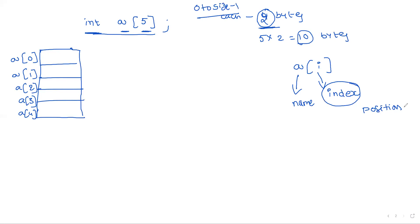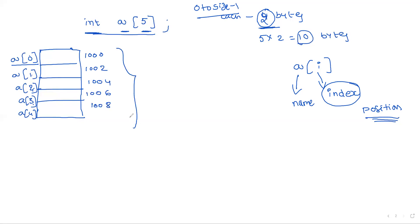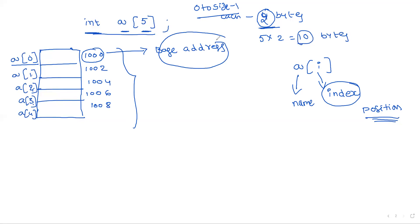The position where an element is stored is called the index. The first element is stored at index 0, then index 1, 2, 3, and 4. For example, if the starting address is 1000, the next element is at 1002, then 1004, 1006, and 1008. The starting address is called the base address. Once we know the base address, it is easy to move to subsequent elements.